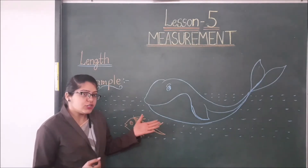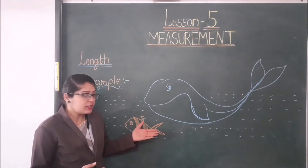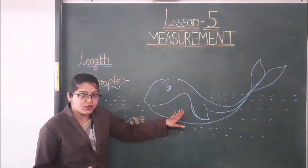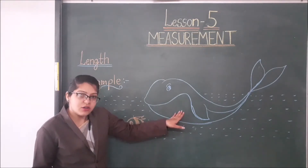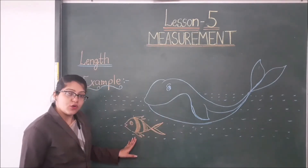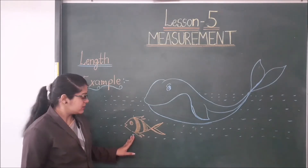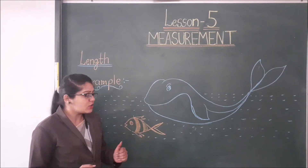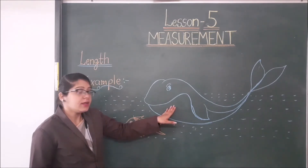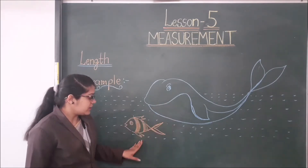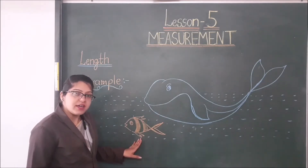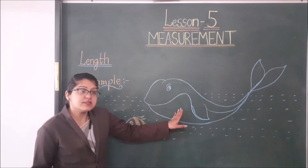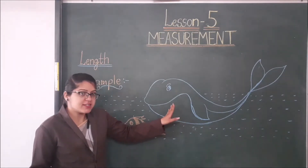Who is long and who is short? The whale is long and the fish is short. We can say: the whale is longer than the fish, and the fish is shorter than the whale.